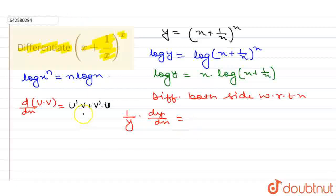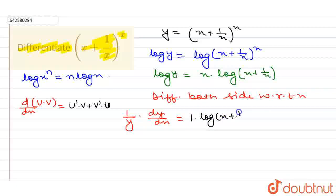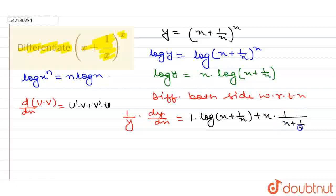By using this formula, this is our u (which is x) and this is v (which is log(x + 1/x)). So the differentiation of x is 1, multiplied by log(x + 1/x), plus keep x as it is and differentiate log(x + 1/x). The differentiation of log(x + 1/x) is 1/(x + 1/x), and the differentiation of (x + 1/x) is 1 − 1/x².